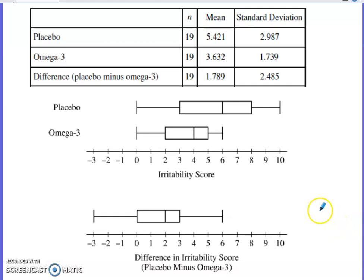They've got the mean irritability score for each of the treatments and then also the difference between the means. They've got the standard deviation for each and then the standard deviation of the difference. They've got a box plot showing omega-3 and placebo. They've also got a separate box plot showing the difference in irritability score placebo minus omega-3.